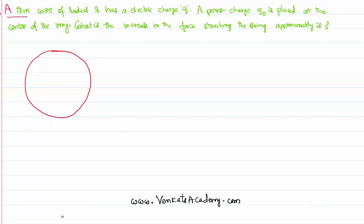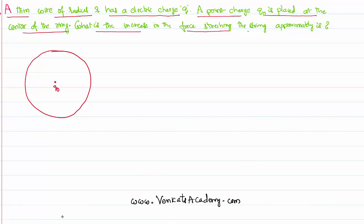A thin wire of radius R is having electric charge Q throughout the wire. A point charge Q0 is placed at the center of the ring. What is the increase in the tension in the string approximately?